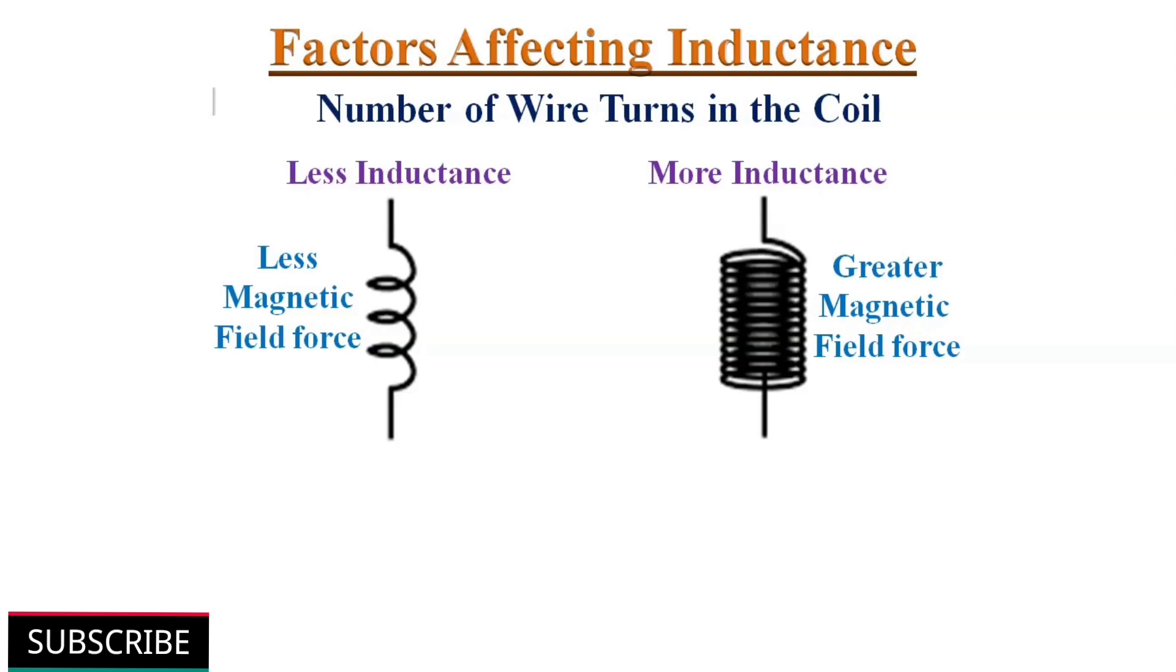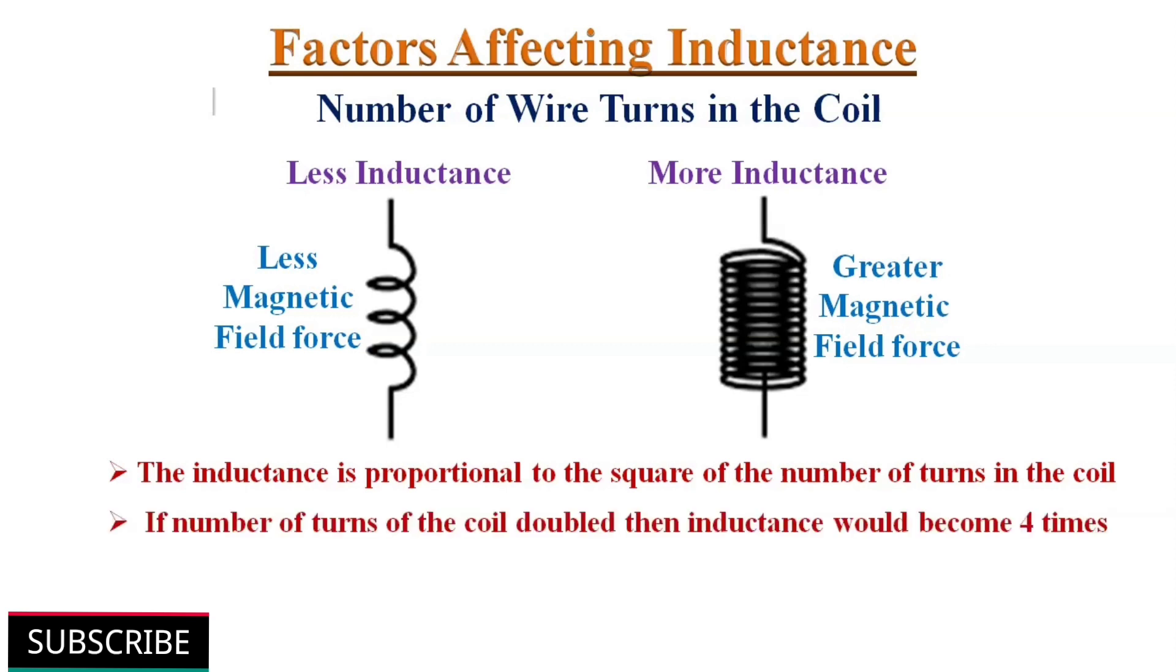There are several physical factors that affect the inductance. First one, number of turns in the coil. The greater the number of turns of wire in the coil results in greater inductance. More turns of wire means that the coil can generate a greater amount of magnetic field for a given amount of coil current. The inductance is proportional to the square of the number of turns in the coil. Hence, if the number of turns in the coil is doubled, then its inductance increases by four times.